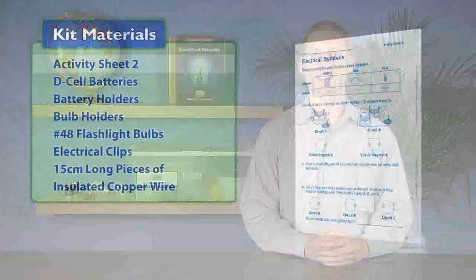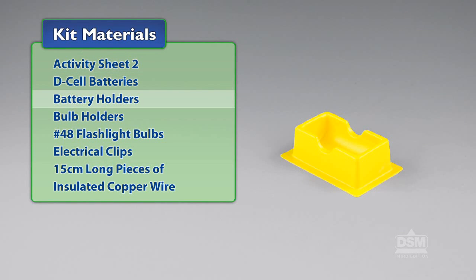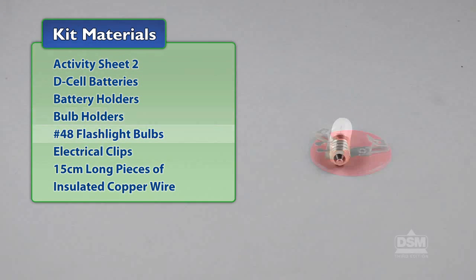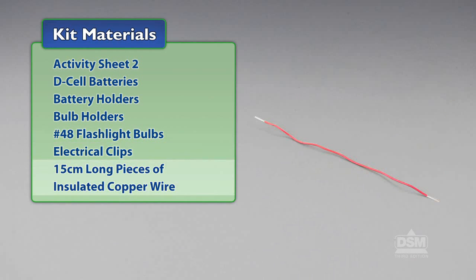You will need the following materials from the kit: Activity Sheet 2, D-cell batteries, battery holders, bulb holders, number 48 flashlight bulbs, electrical clips, and 15 cm long pieces of insulated copper wire.